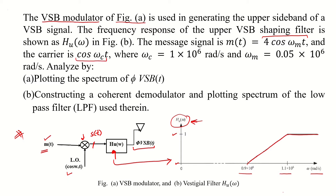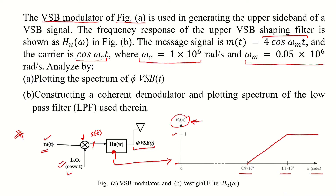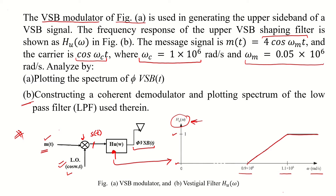The carrier is cos(ω_c t), where ω_c is 1×10^6 radians per second, and ω_m is 0.05×10^6 radians per second. We are asked to plot the spectrum of φ_VSB(t), and then to construct a coherent demodulator and plot the spectrum of the low-pass filter used therein.